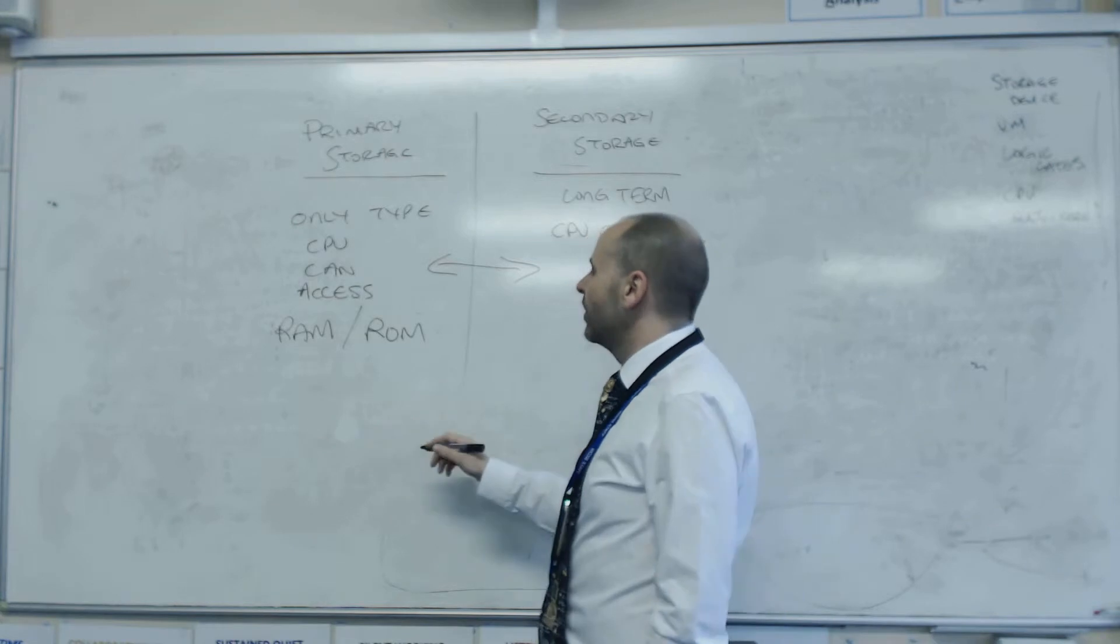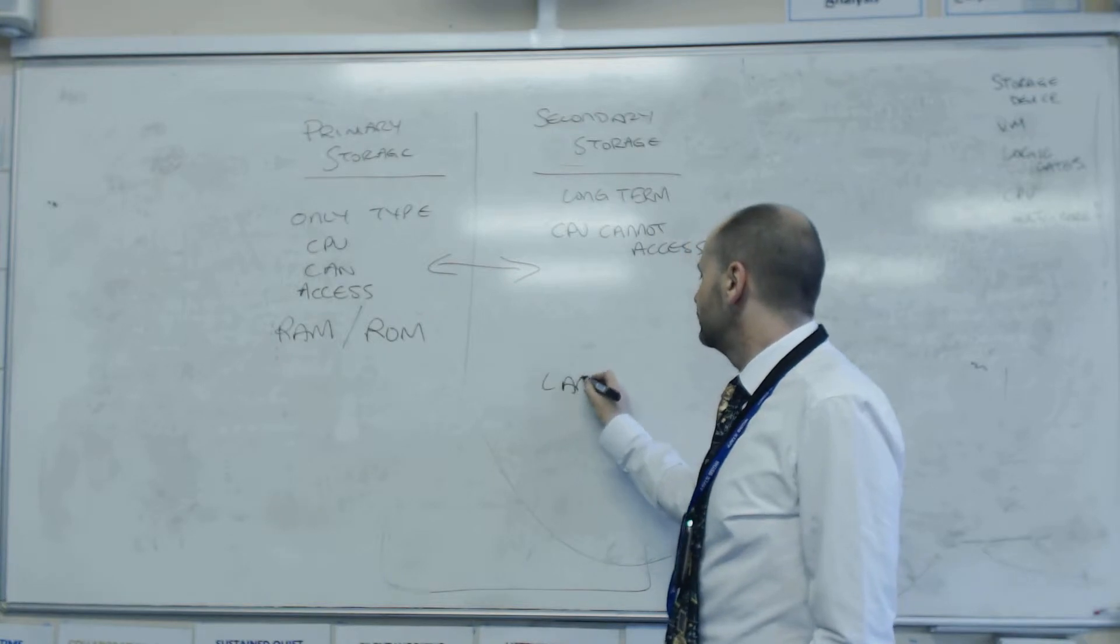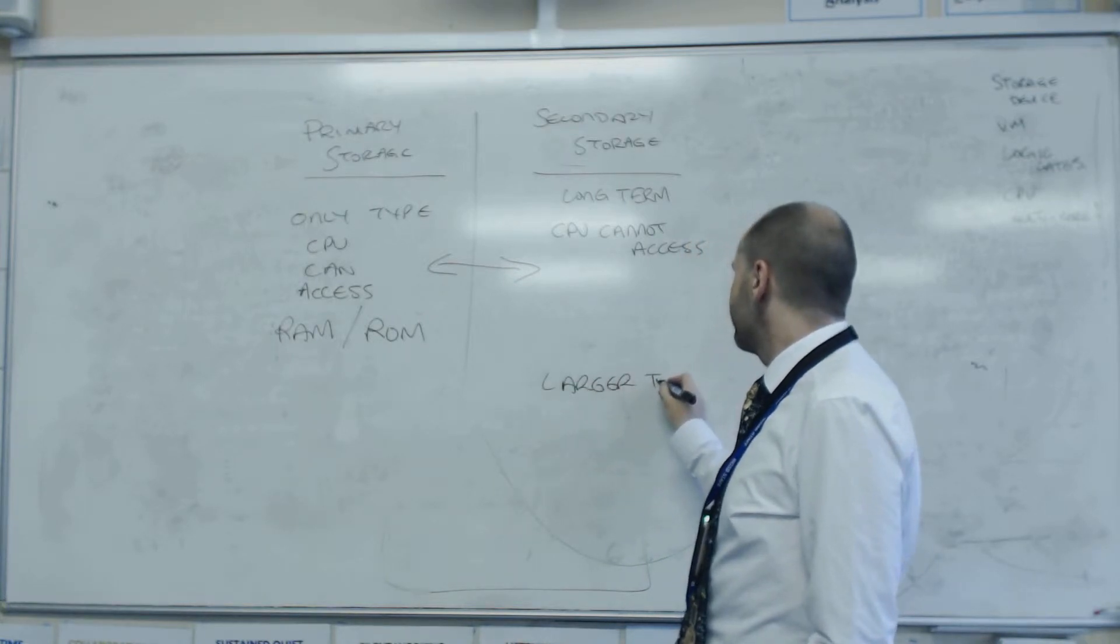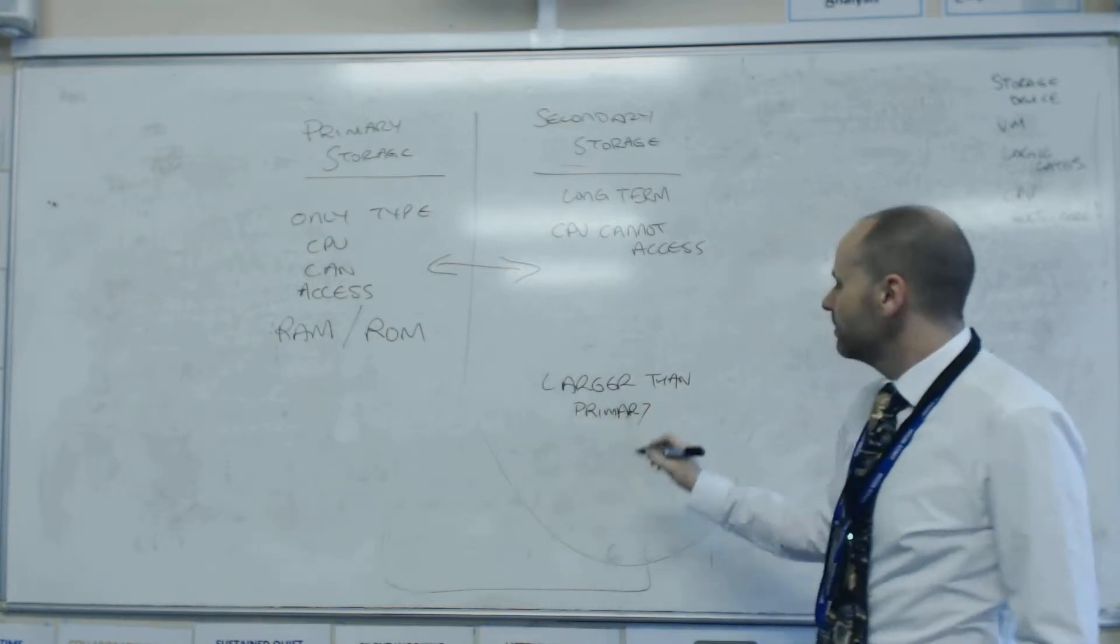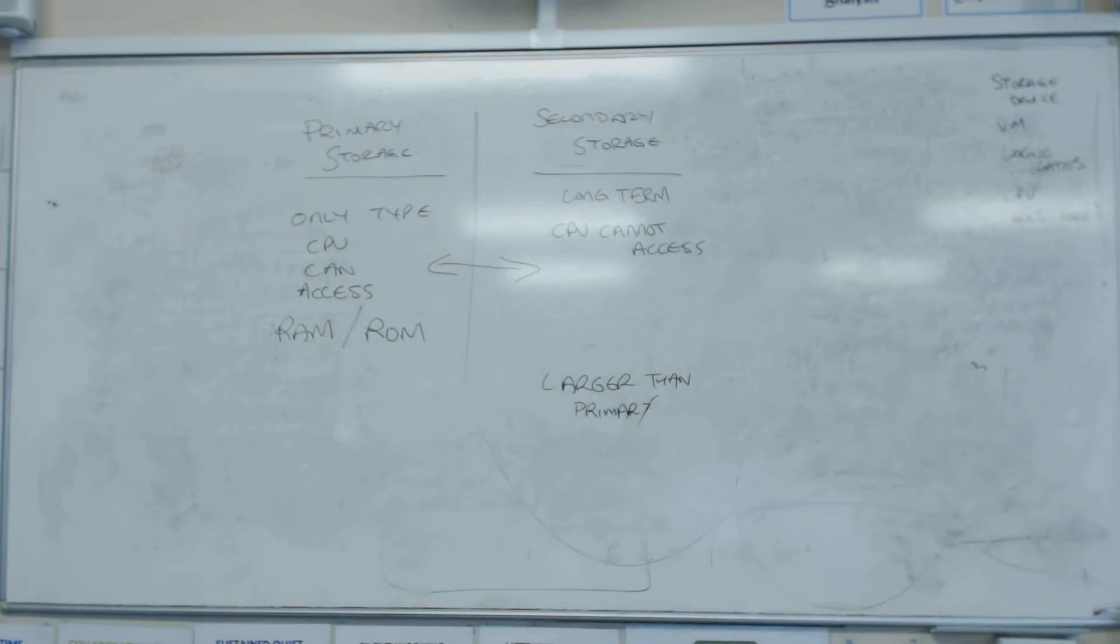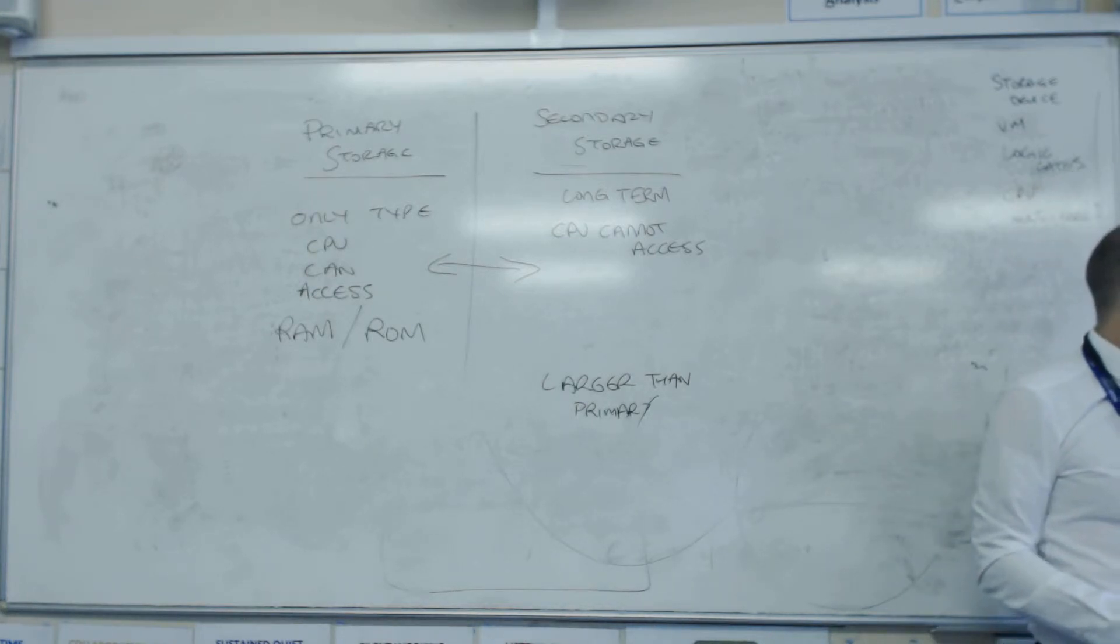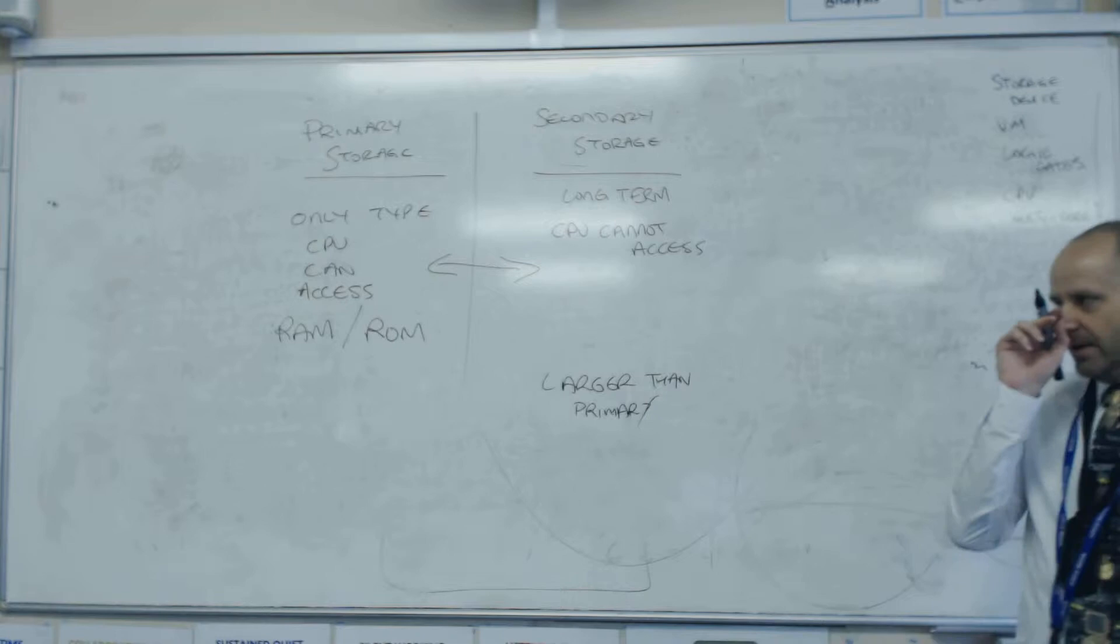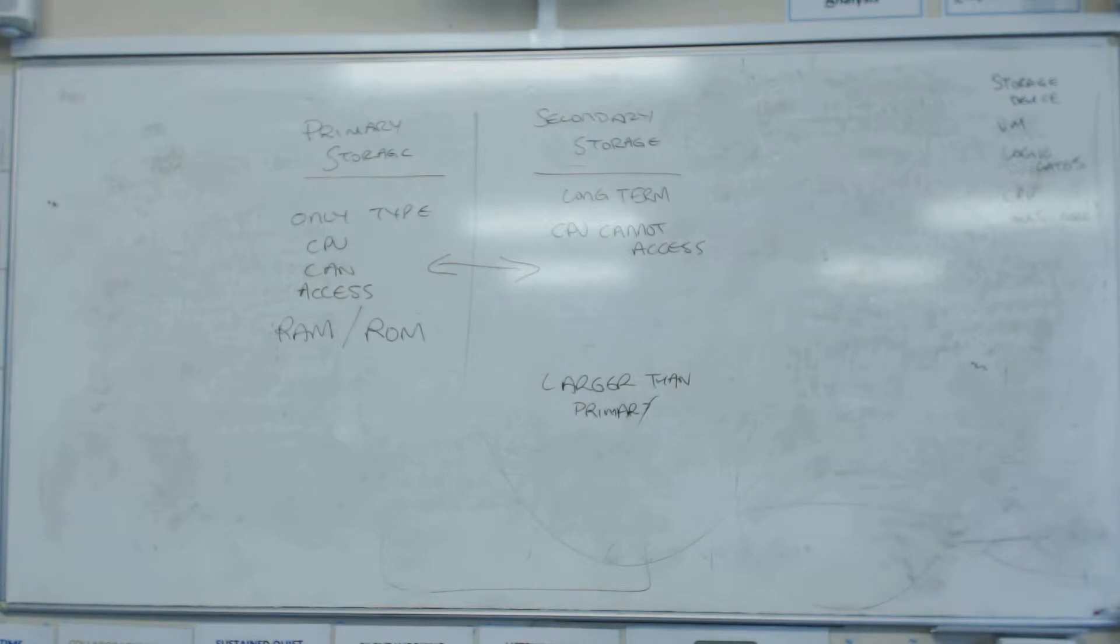The other problem we've got is that secondary storage is much larger than RAM. You might have, if you've got a fancy computer, maybe 16 gig of RAM, but 16 gig of secondary storage is nothing, is it? You know, it's a USB stick. You're more likely to have a couple of terabytes of secondary storage. So what that means is not everything can fit in RAM, and that's where virtual memory comes in.